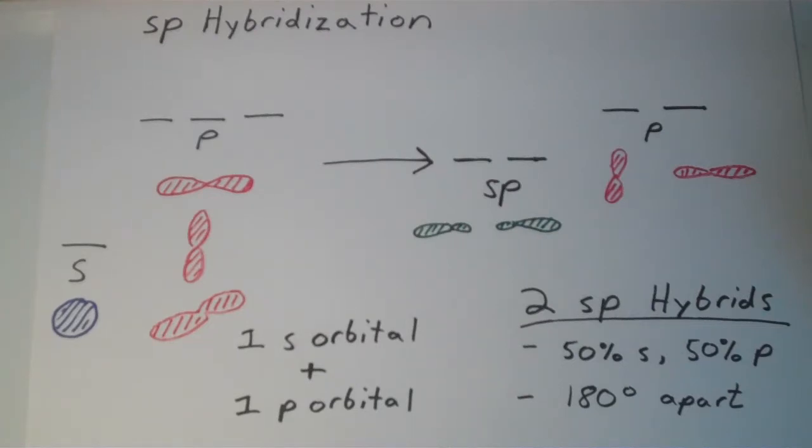Then we took a look at sp2 hybridization, which is the combination of the s orbital with only two of the p orbitals, leaving behind an unhybridized p orbital and also forming three sp2 hybrids. We saw that in molecules like ethylene, which contain a carbon-carbon double bond, and we observed that the carbon-carbon double bond is composed of two different types of overlaps: the direct overlap known as a sigma bond and a sideways overlap that we call a pi bond.